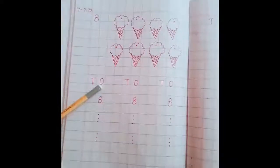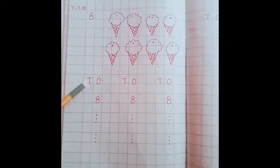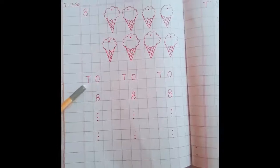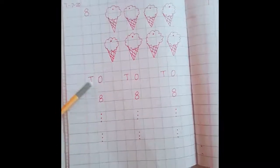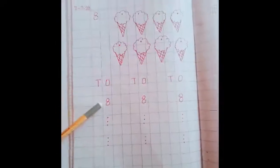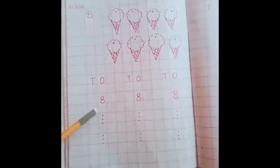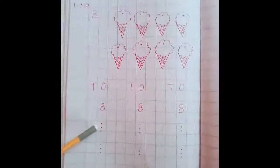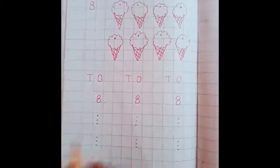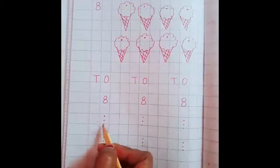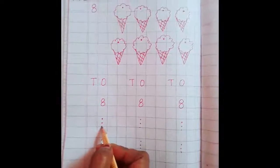Look here. O means Ones, T means Tens. Below Ones I have written 8. And then in the next box, 3 dots: 1, 2, and 3.